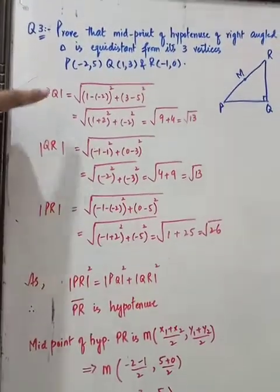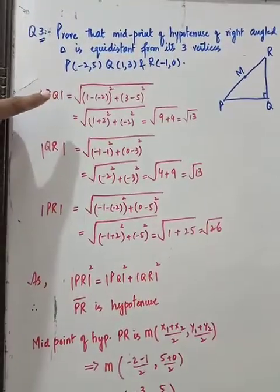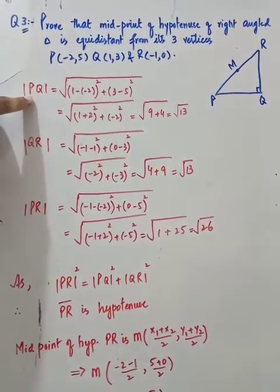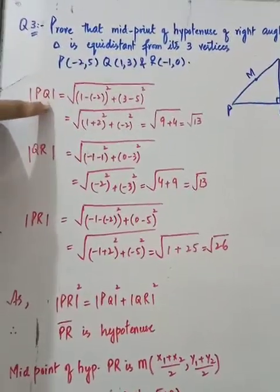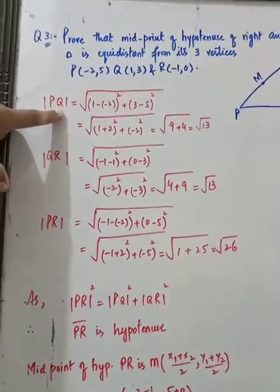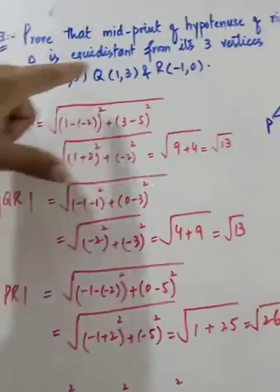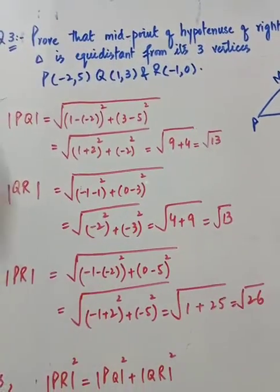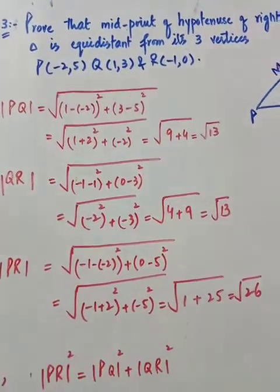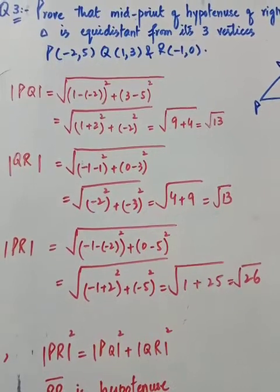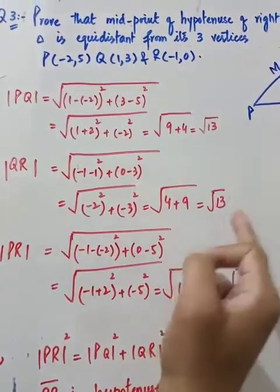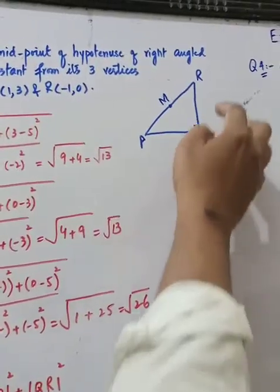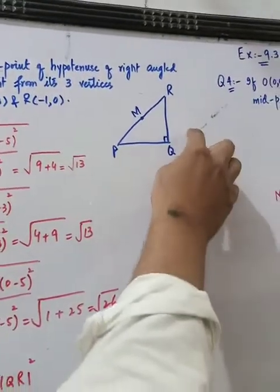PQ, QR, and PR find kare liya — distance formula se. Agar aap PQ lete ho to ye x1 y1 aur x2 y2 hai. Distance formula se values put karke answer milega. Ye dekhein — PQ under root 13 hai aur QR bhi under root 13 hai.